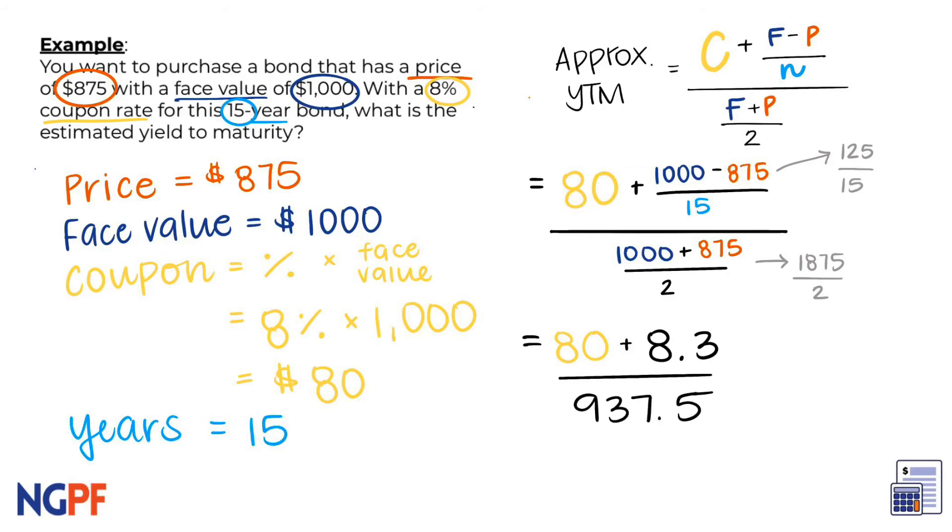Lastly, we can add what's in the numerator and get 88.3 divided by 937.5, giving us a final answer of 0.094187. That means, in percent form, our final yield to maturity for this bond is approximately 9.4%.